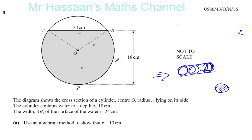Center O, radius R, lying on its side. The cylinder contains water to a depth of 18 centimeters. So 18 centimeters is the depth of the water. It goes up to there. It doesn't fill the whole cylinder. And the width AB of the surface of the water is 24. Now, of course, the surface of the water is like the chord of a circle. The chord is a straight line which joins two points on the circumference of a circle. Now it says use an algebraic method to show that R equals 13 centimeters. So let's go and do that now.